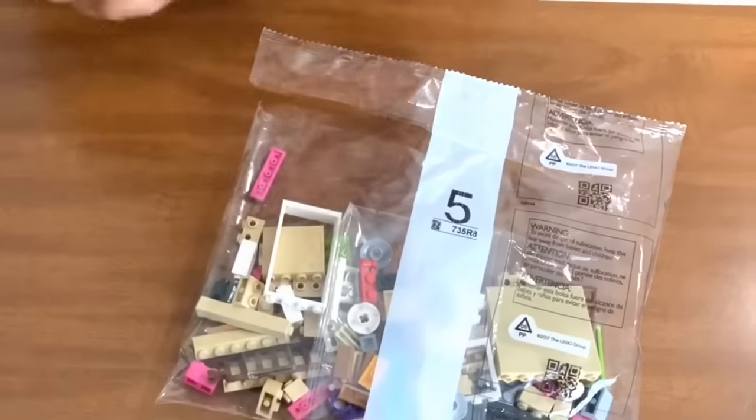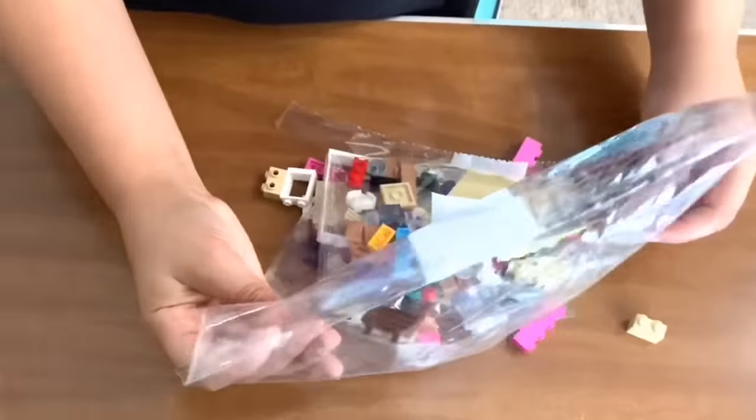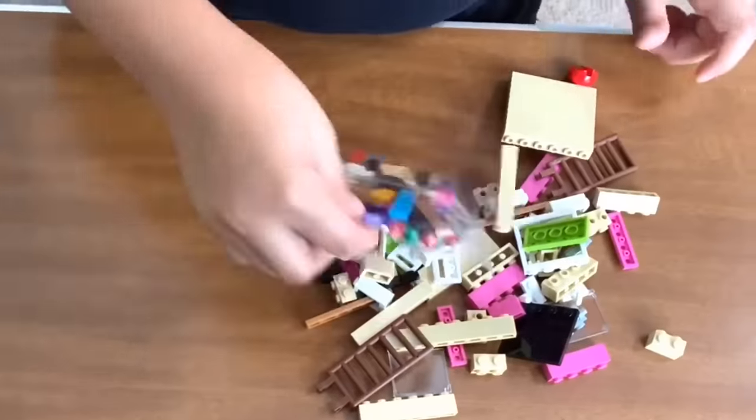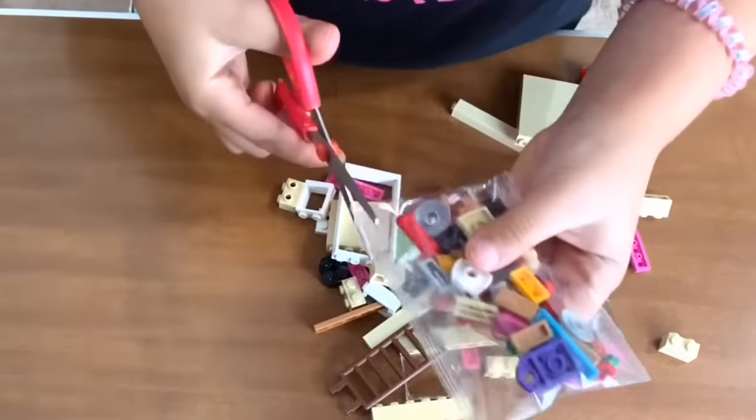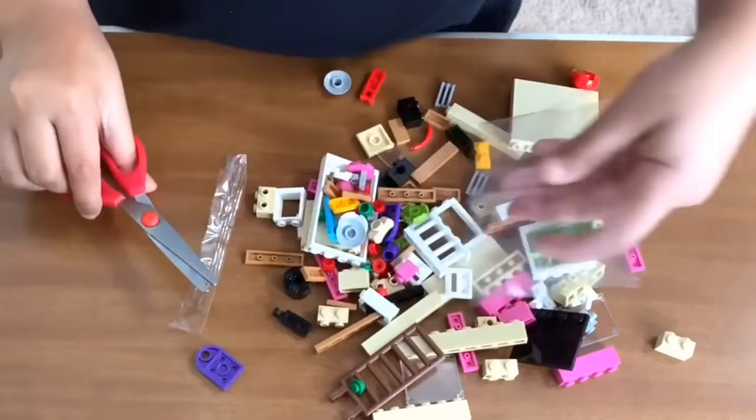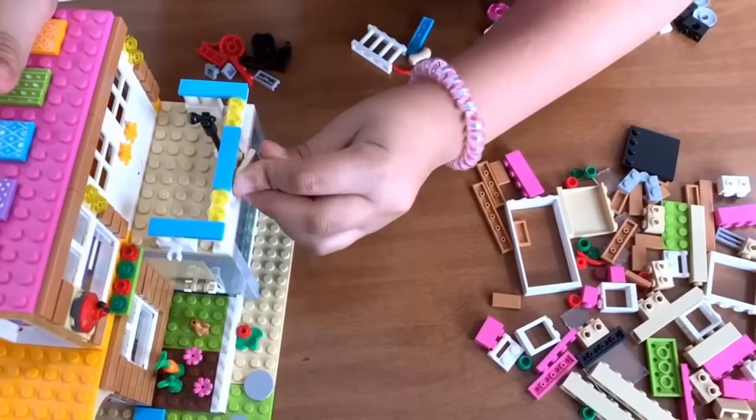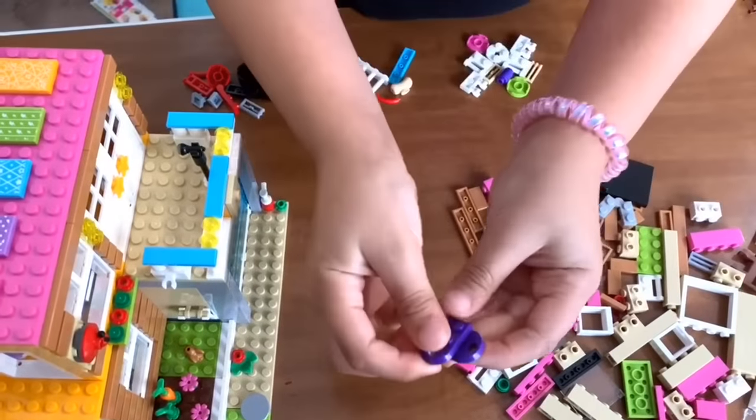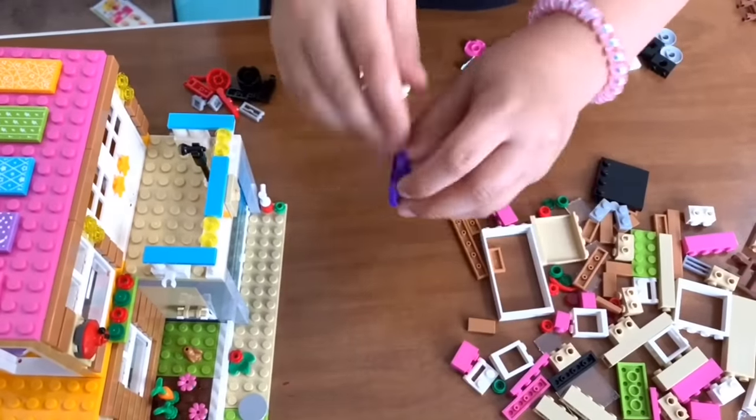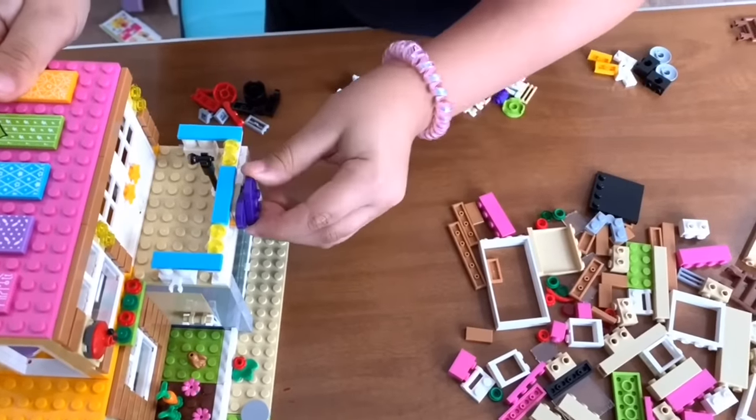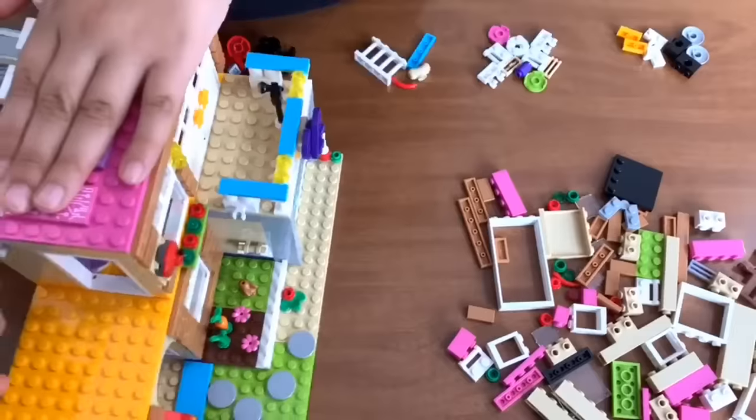Now we're up to bag number five. There's six bags. And I'm so happy that we're so close. Now we're bag number six, which is the top level of this build. Let's see what we got. So now we are going to do the signature logo of Heart Lake City, which is the little crossed heart for two pieces.